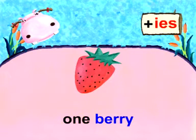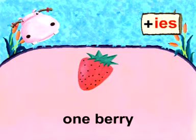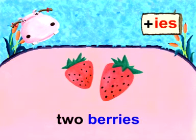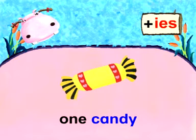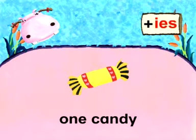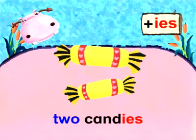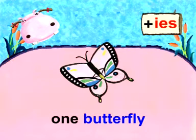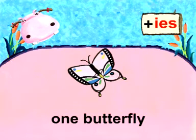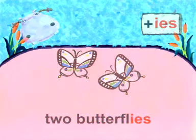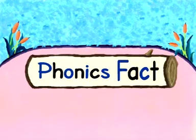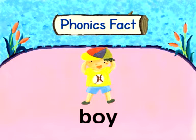Read with me: one berry, two berries. One candy, two candies. One butterfly, two butterflies. Phonics fact: however, for words that end with a vowel and Y, we just add -S and need not change anything. Let's take a look at the examples.